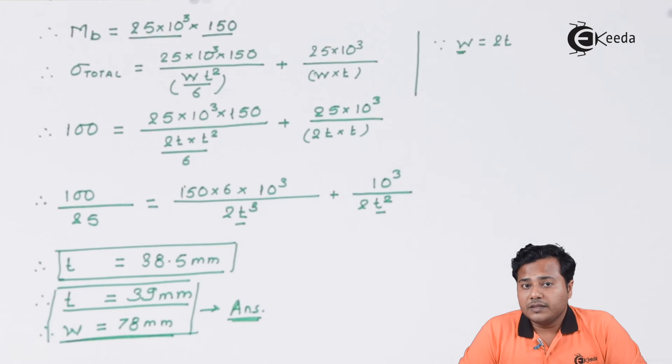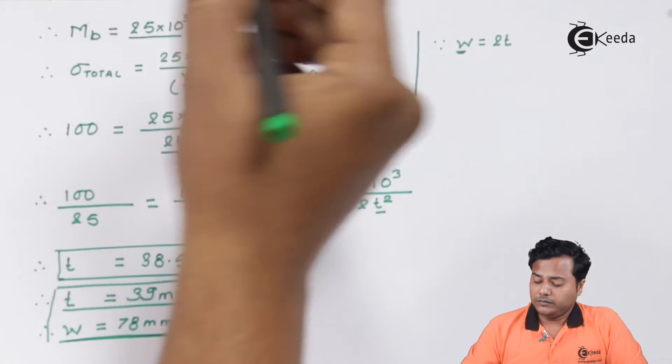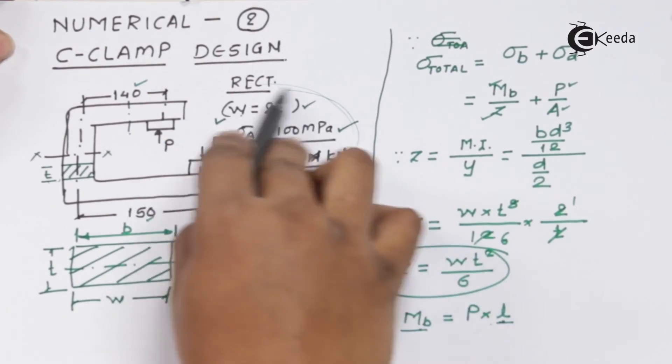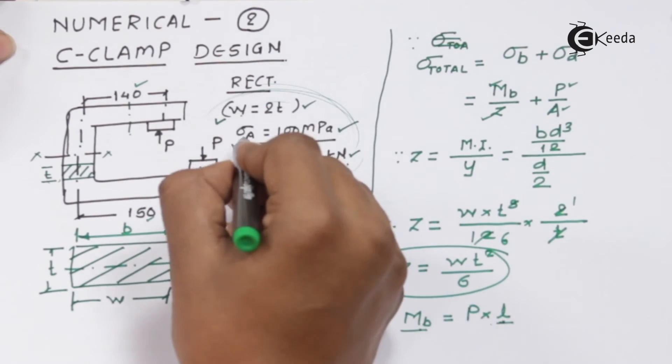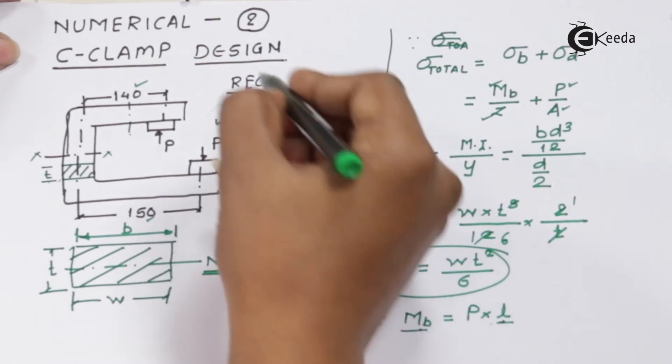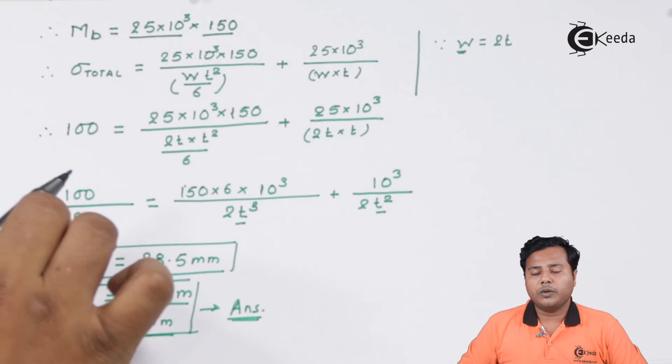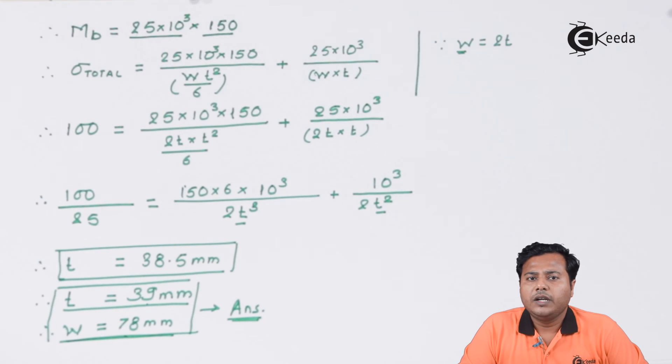These are the answers which are required. With the given conditions initially, the safe value considering your allowable stress comes out to be 39 mm for the thickness and 78 mm for the width of the cross section. This was a problem where we had to use the given inputs to find out the dimensions of the given product.